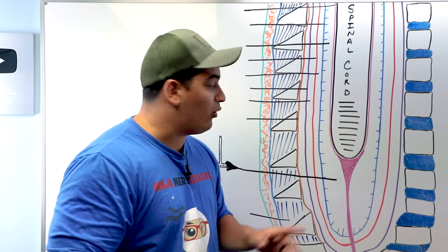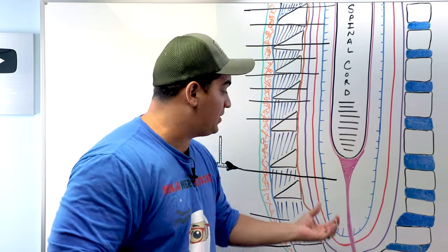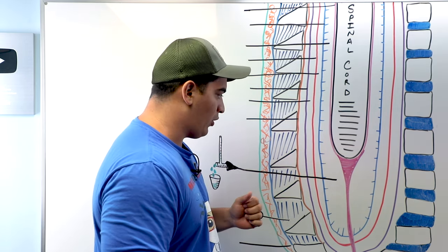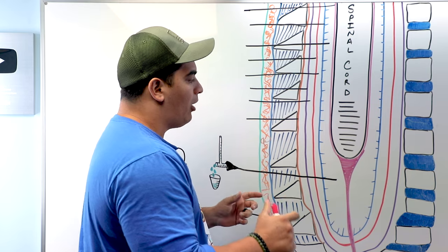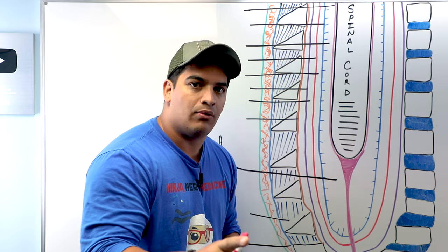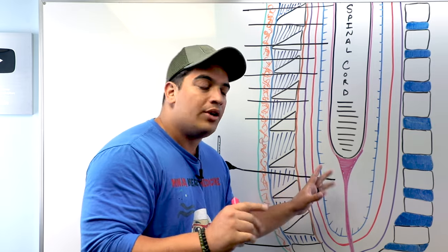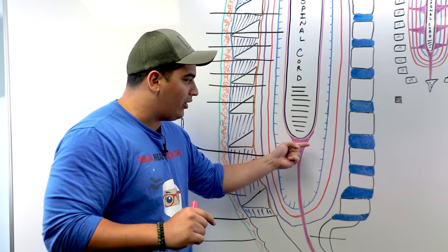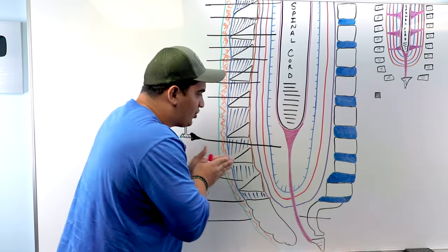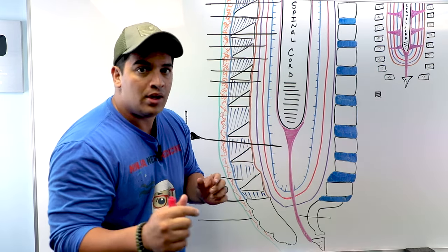To perform a lumbar puncture, we need to know the general anatomy around the spinal cord, including those meninges and spaces. The first thing you have to know is where does the spinal cord end? It ends around L1-L2. So I know I don't want to insert my spinal needle at L1-L2. The safe area to insert your spinal needle to get cerebrospinal fluid is around L3-L4.